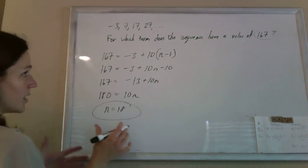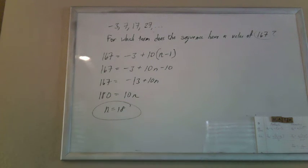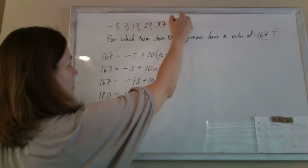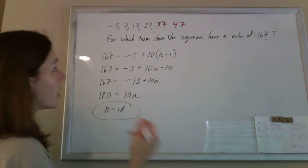So the 18th term should be 167. It's a small enough number we could expand it out, 37, 47. Actually, I don't really want to, but you can do it.